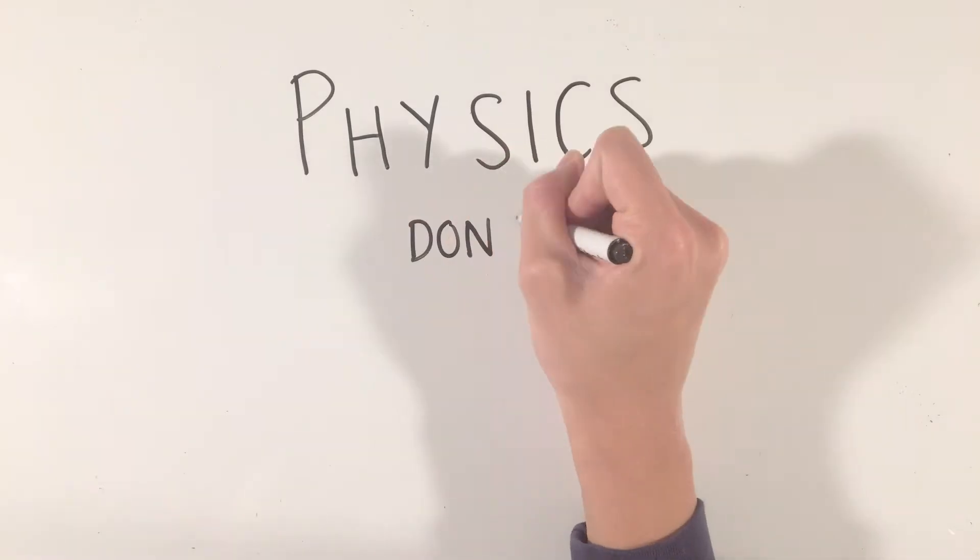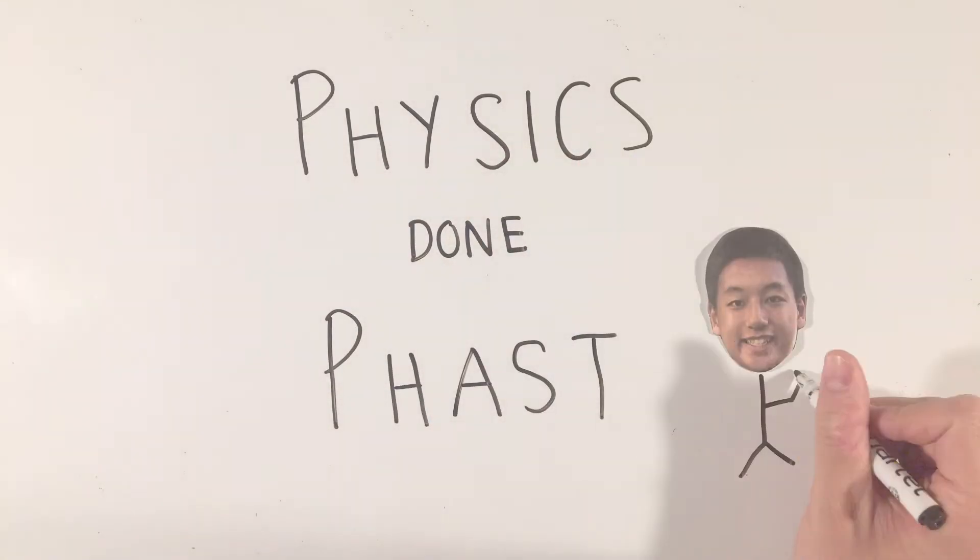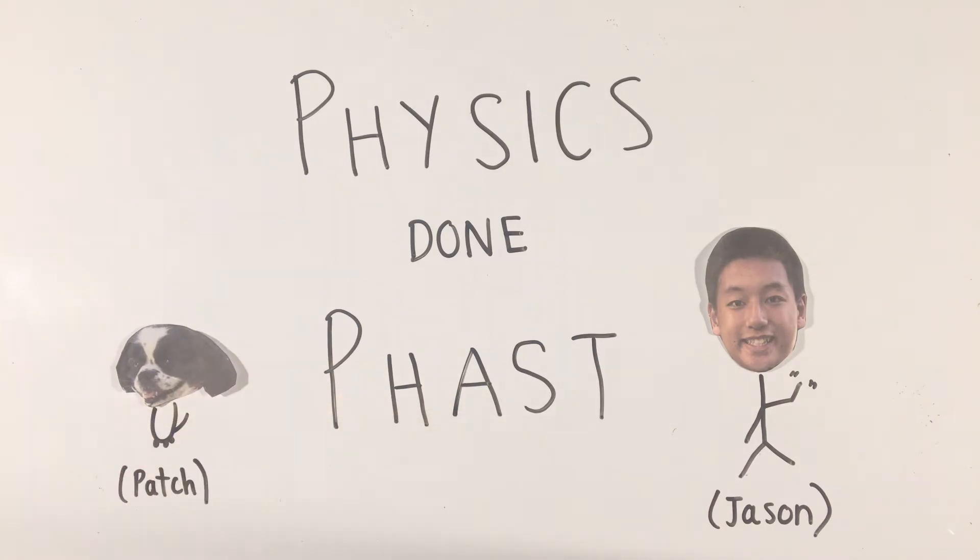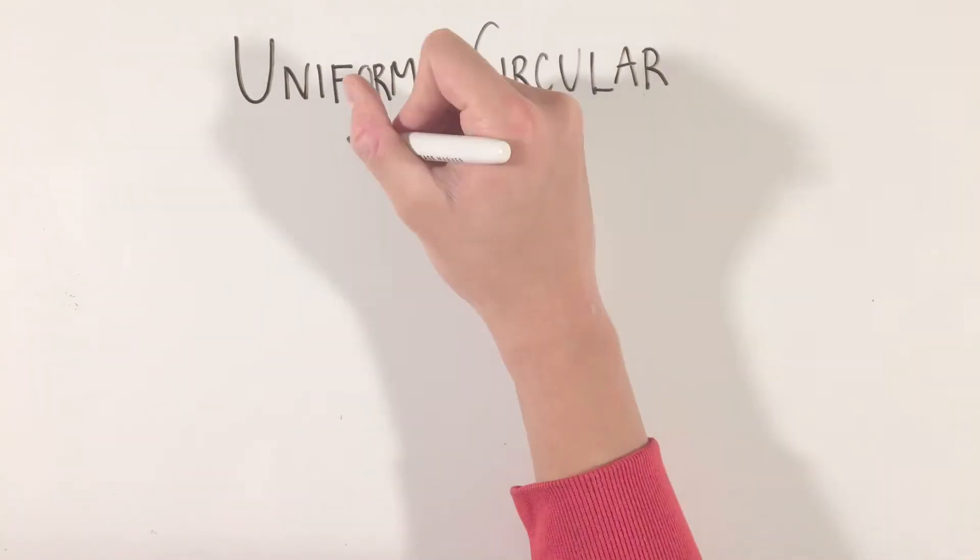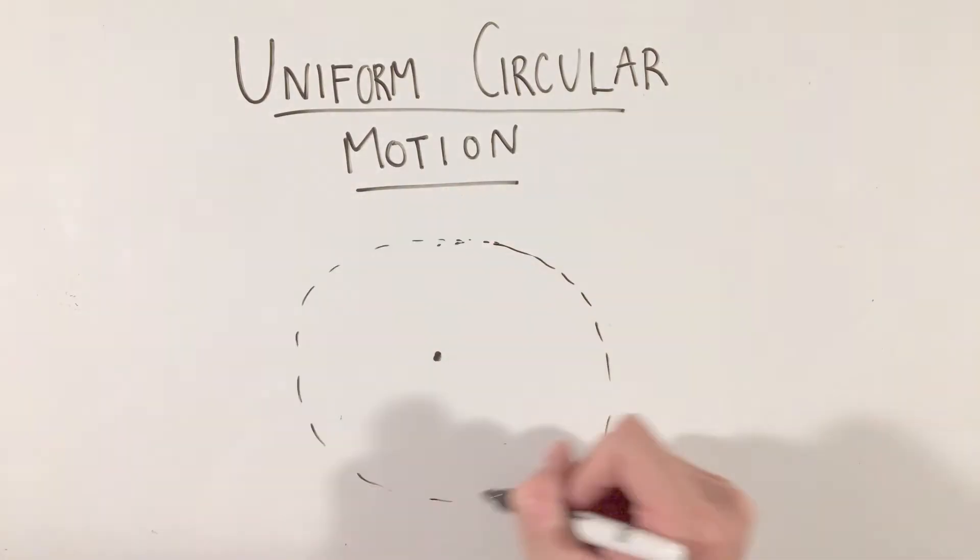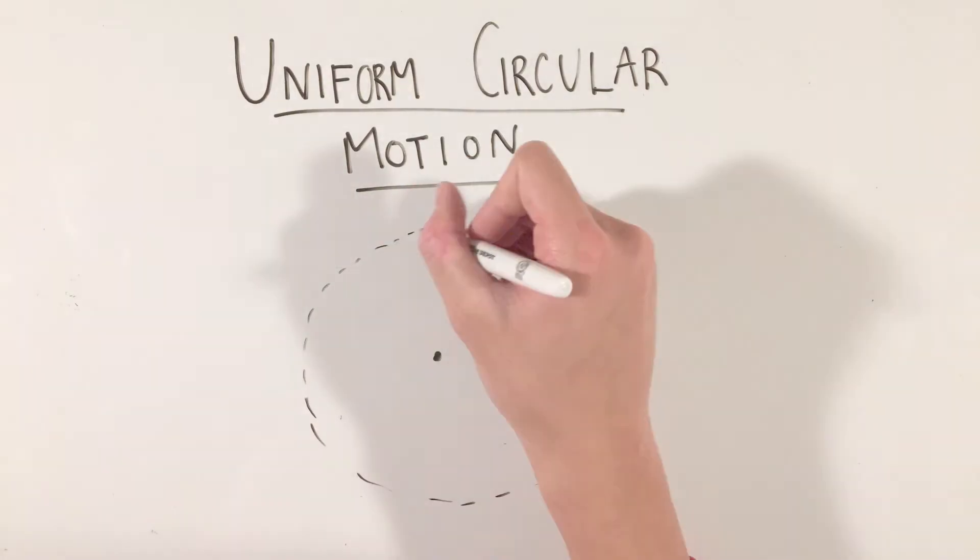We've all learned about linear position, velocity, and acceleration, but what happens when objects start to move in circles? While there are many different curved paths an object could take, one of the most fundamental to understand is uniform circular motion. The basic idea is an object that travels in a circle at a constant speed.